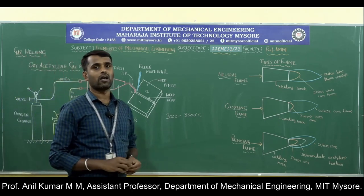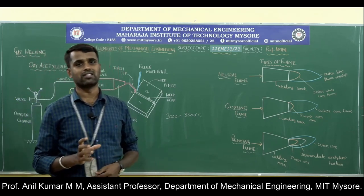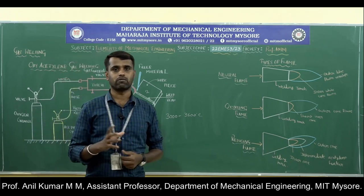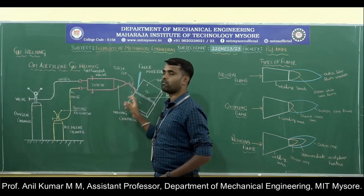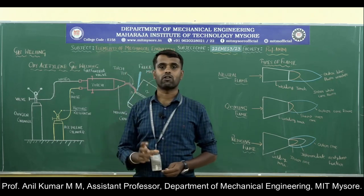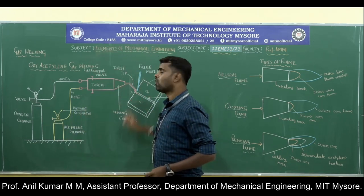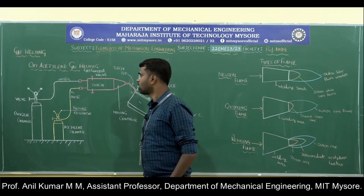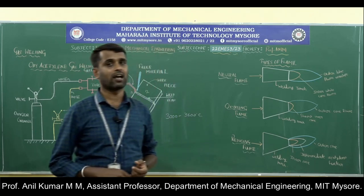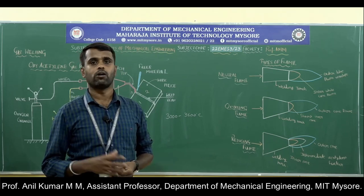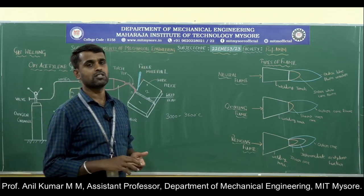That is the working of the oxyacetylene gas welding process. The heat source is a gas flame produced by supplying the suitable proportion of oxygen and acetylene gas into the welding torch. That flame we call the oxyacetylene flame. The most commonly and widely used fuel gas in the gas welding process is acetylene gas.